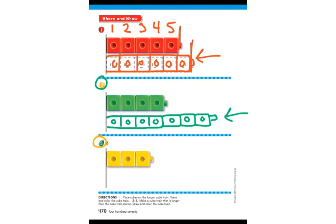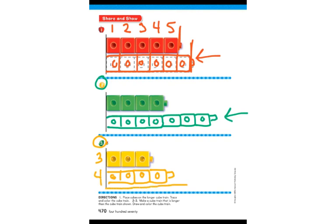Next is number three at the bottom. They're asking you to draw a cube train that is longer. If I drew this cube train right here — is this longer than the top one? No, it's actually shorter, so I need to keep adding cubes until it's longer. Is it the same length? Yes, so I need to add more. Now it is longer. The top one has three cubes, and the bottom one has four, so this one is longer than the top one.